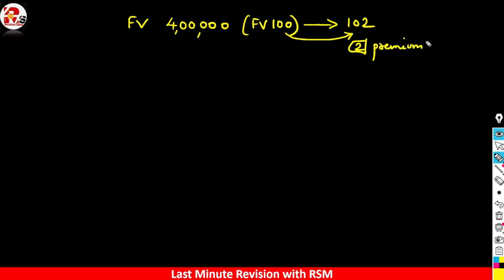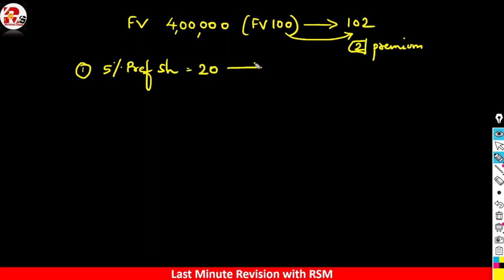The company decided to give options to its debenture holders. The first option is 5% preference shares with a face value of 20 rupees, and these will be issued at 22.50 rupees. This is quite simple — I'll show you how to make the working note.